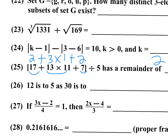For number 26: 12 is to 5 as 30 is to what? Set up the proportion: 5 times 30 equals 12 times x, so x equals 150 divided by 12. Divide by 6 to reduce: 5 over 2. Then 5 over 2 times 5 is 25 over 2, which is the answer for number 26.